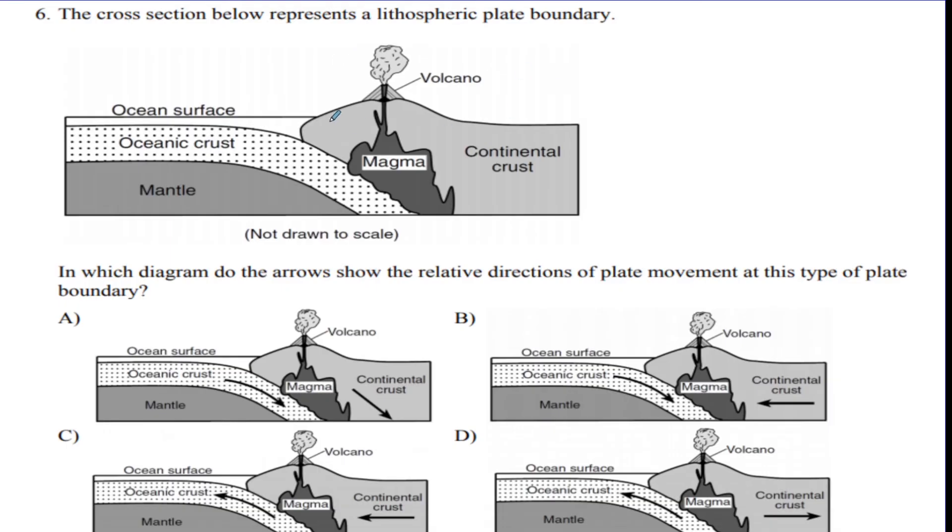Number six, we've got a plate boundary here. Which diagram do the arrows show the correct direction at this type of plate boundary? This is oceanic crust hitting continental crust. And the oceanic crust is going to subduct, remember, underneath the continental crust. So these are hitting each other. And then it melts, makes magma, and you get your volcanic chain. This is subduction zone, and that's a trench. So you want them to be coming at each other. So your best answer is going to be B.